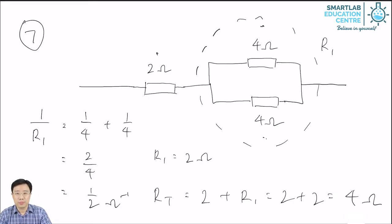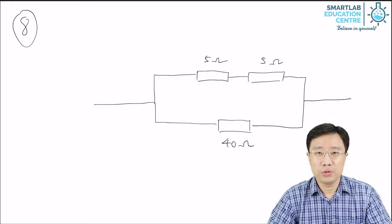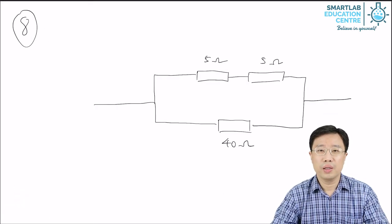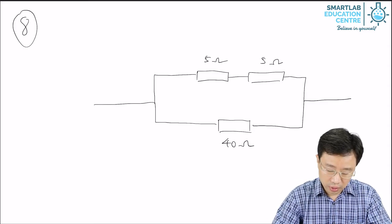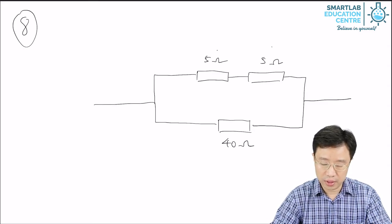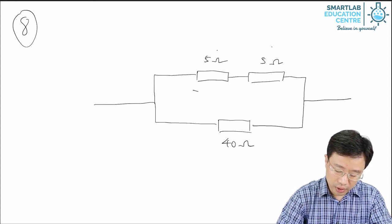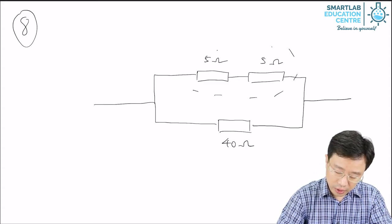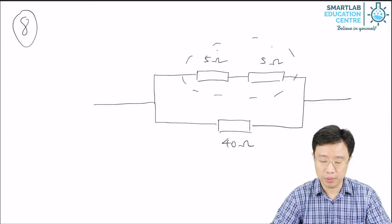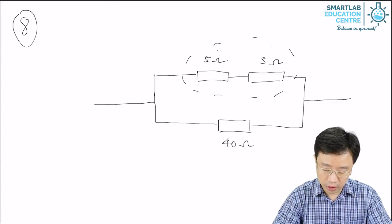This is one example. Now let's go on to our second example. In this example, you can see that two 5-ohm resistors are in series, and this arrangement is in parallel with the 40-ohm resistor.